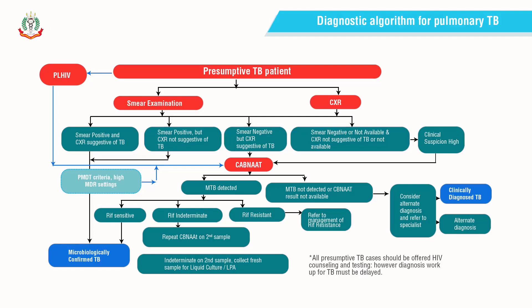The final take from this algorithm is that a patient could be classified as microbiologically confirmed, clinically diagnosed with drug-sensitive TB, rifampicin-resistant TB, or rifampicin status unknown.